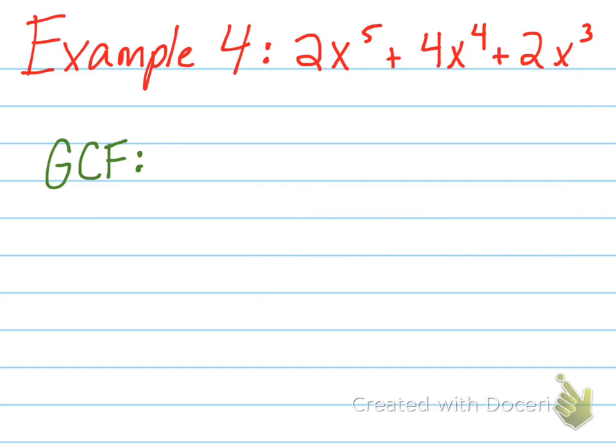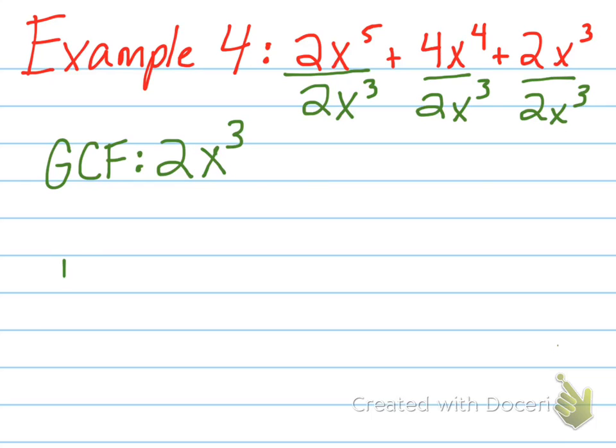In this last example, we can take out a coefficient and a variable. My greatest common factor is going to be 2x cubed. I will divide each term by 2x cubed. So as I factor, remember, the greatest common factor goes outside my parentheses. So my greatest common factor is 2x cubed.